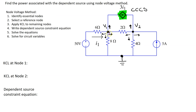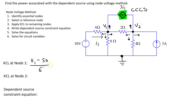We follow the direction of this branch current. The end where this current is entering the resistor is assumed to be at higher potential and the end where the current leaves is assumed to be at lower potential. This branch current is V1 minus the voltage at this side. The voltage at this side is 50 volts because we have the ideal independent voltage source directly connected between ground and this point. This gives us (V1 minus 50) over 6. Through the 8 ohm resistor, it's V1 minus 0 over 8.